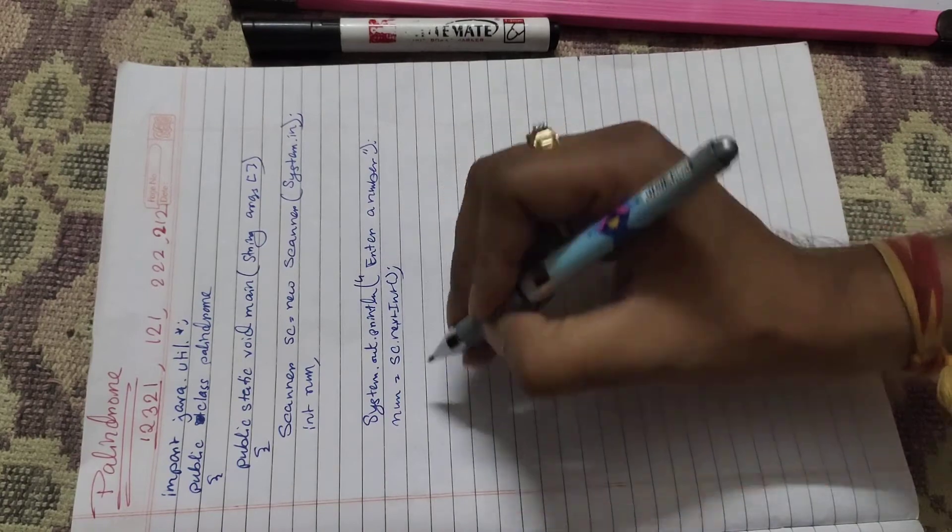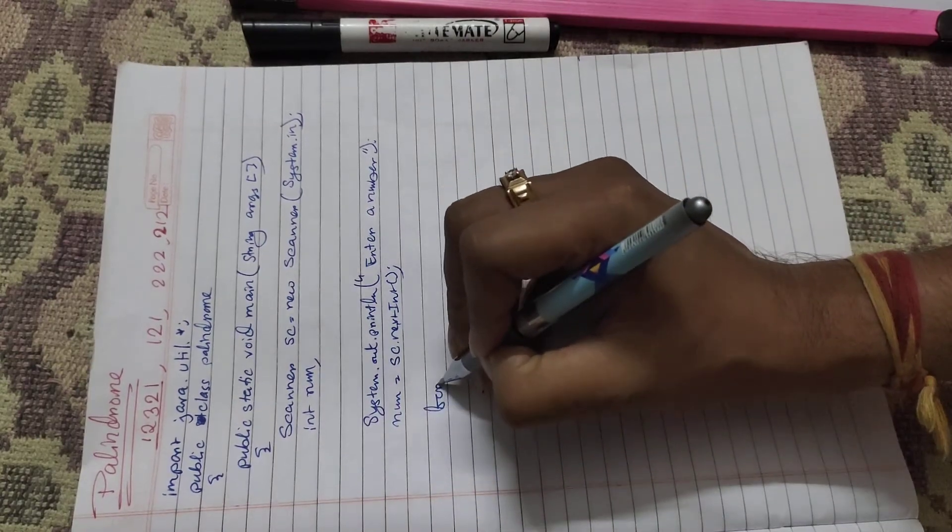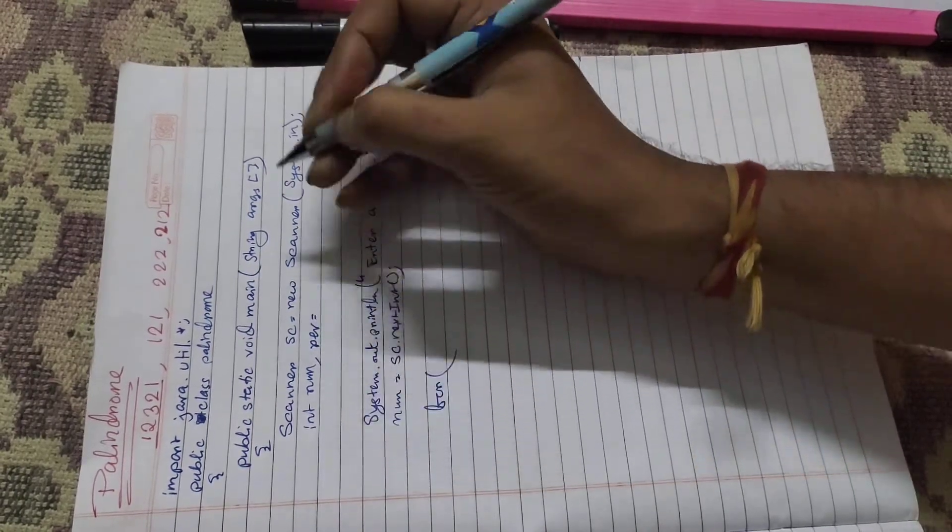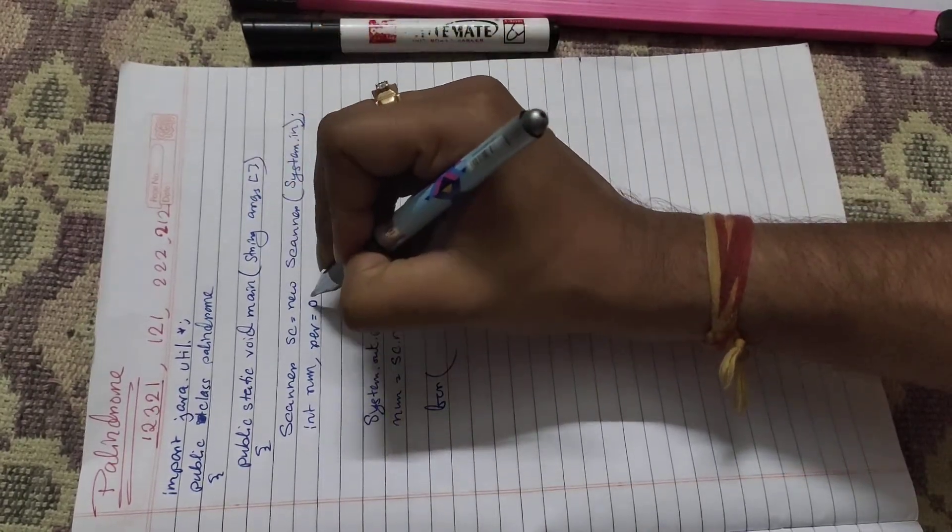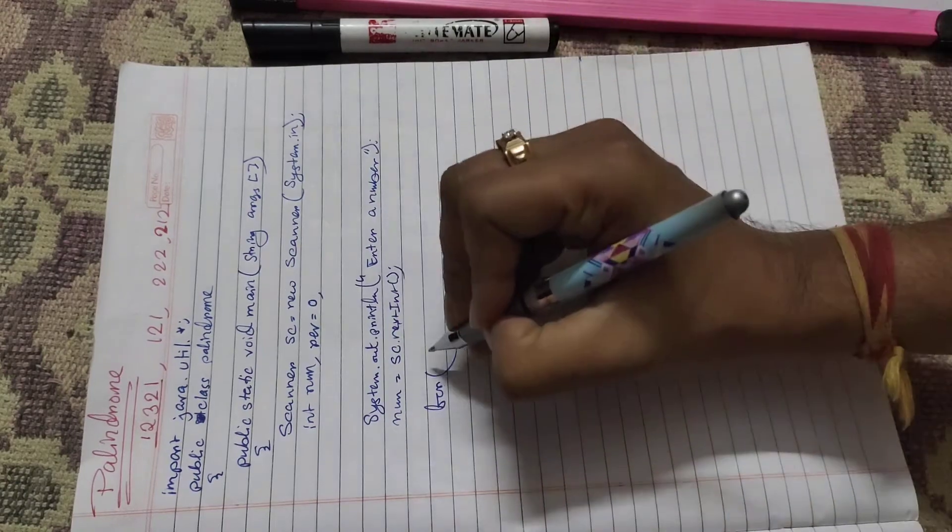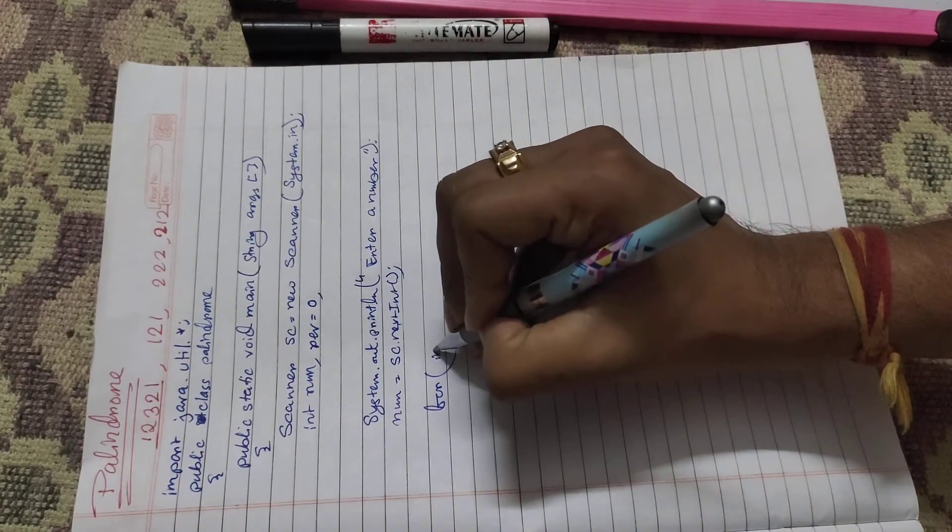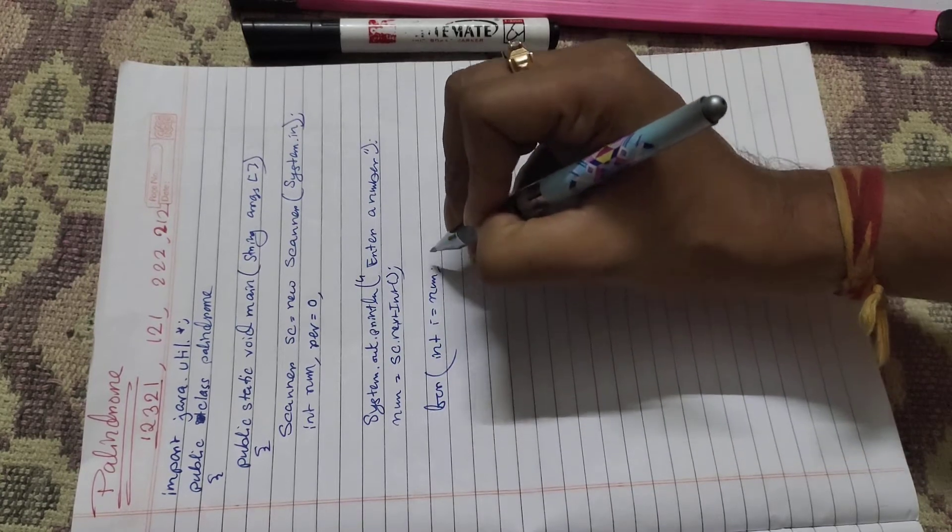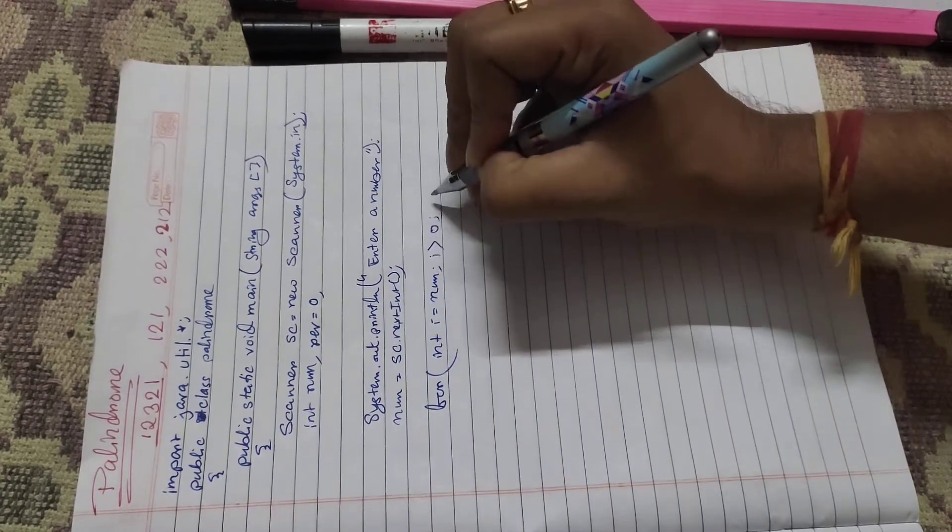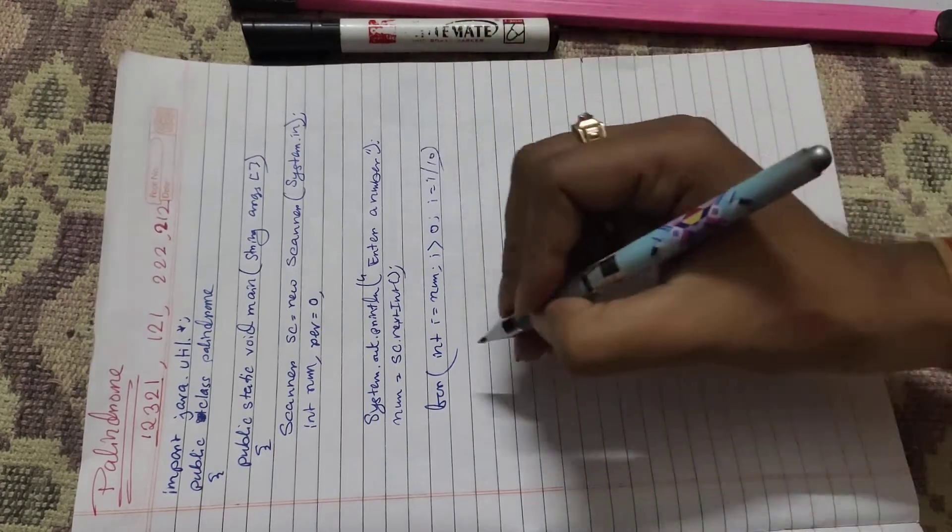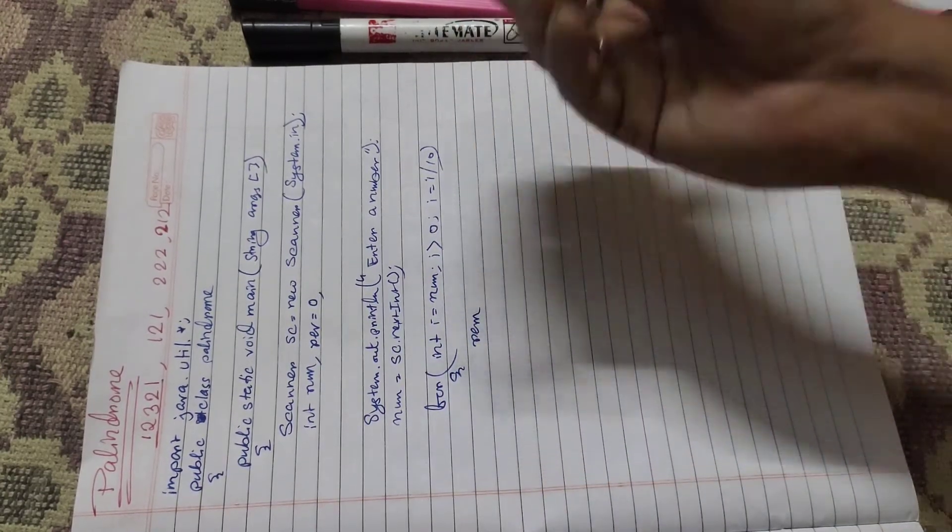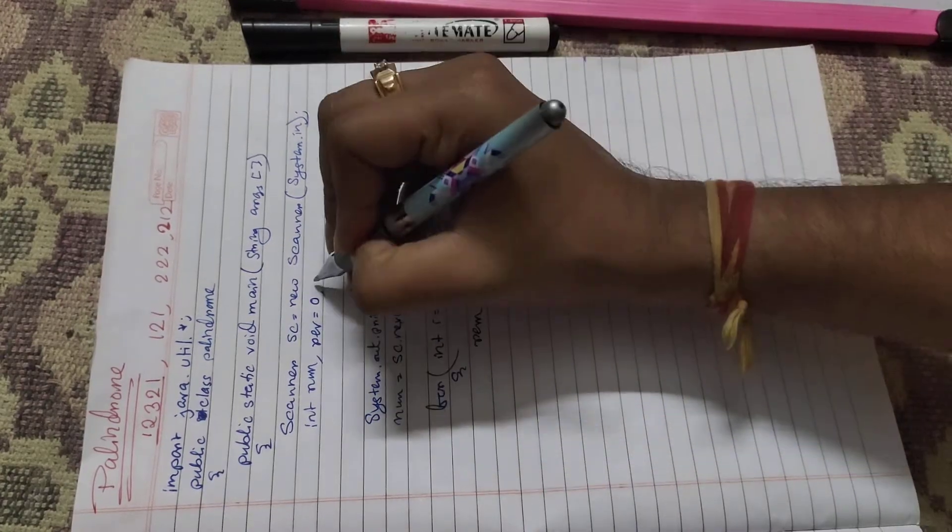So here we use a for loop and create a variable rev which is initialized with the value of zero. Next, int i equals num, i greater than zero, i equals i divided by 10. So here we extract the digit.